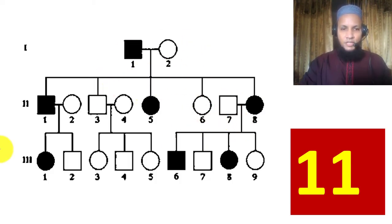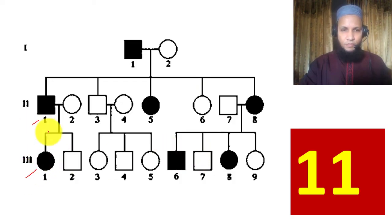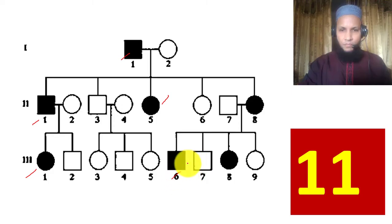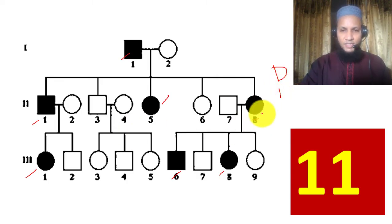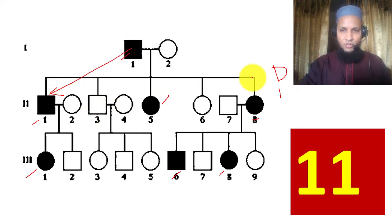Example 11: Checking for skipping of generation — there is no skipping, so it is dominant. Is there any male-to-male transmission? Yes, there is male-to-male transmission. Therefore this is autosomal dominant disease.